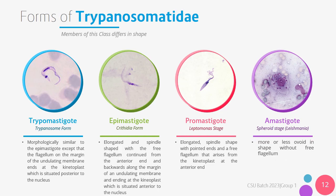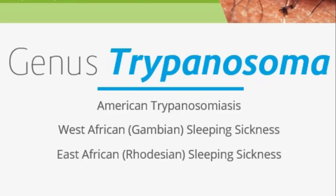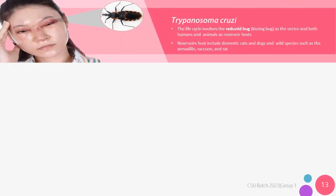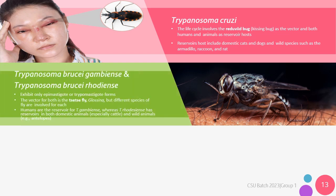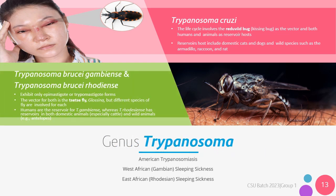A medically important genus under this class is genus Trypanosoma. Species of this genus cause American Trypanosomiasis and varieties of sleeping sickness, namely the West African or Gambian and East African or Rhodesian variety. Specifically, these species include Trypanosoma cruzi, Trypanosoma brucei gambiense, and Trypanosoma brucei rhodesiense.